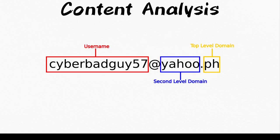Before doing any exploitation of the email or running it through any specialized queries, I first break down the email into three distinct parts: the username, the second level domain, and the top level domain. We're going to go through each of these sections individually and highlight what additional information we may be able to glean from each of them.